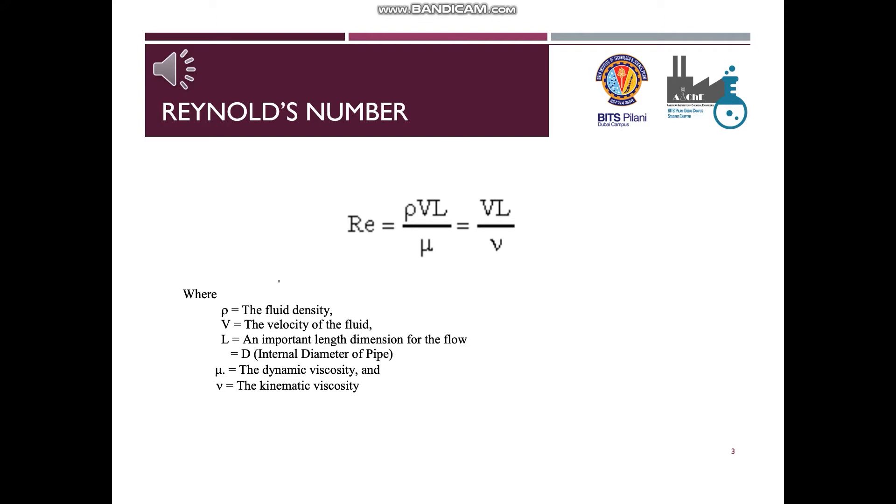Reynolds number is a dimensionless parameter that is a ratio of inertial or destabilizing force to the viscosity or stabilizing force. As Reynolds number increases, the inertial flow becomes relatively larger and the flow destabilizes and becomes fully turbulent.